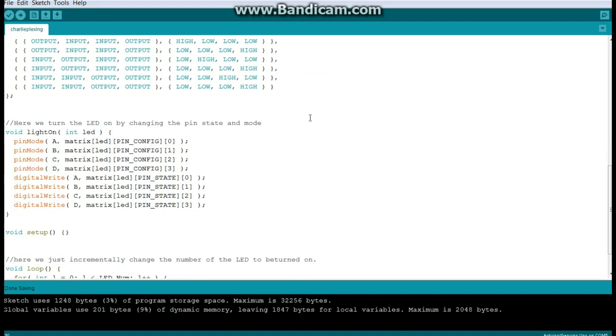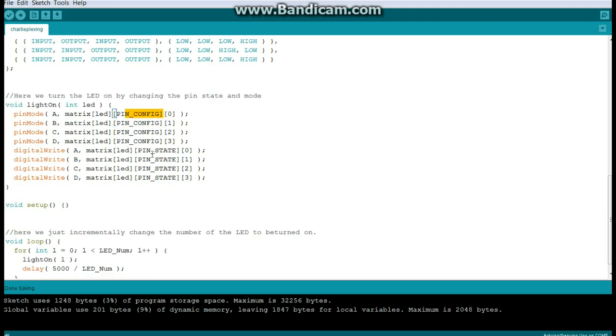Then the next one turns on this one and simply by switching through these one at a time we can change which LEDs are on. And we do that right here. So we say pin mode A, that's pin 8, matrix LED which one, then our pin config. Then we do B, C, and D. So we're setting the mode whether it's an input or an output. Then we do our digital write which is our state, whether it's high or low. So you have to have two lines for each of these. I hope that makes sense to you.